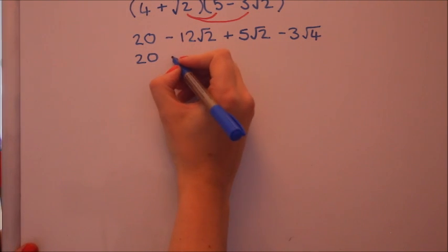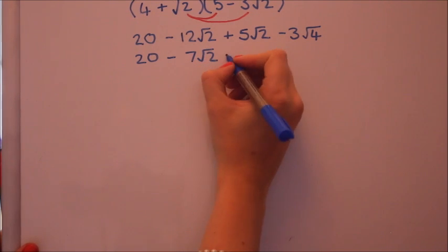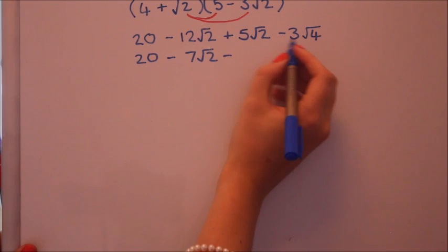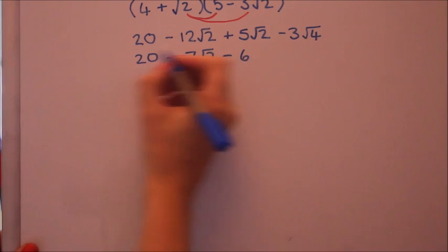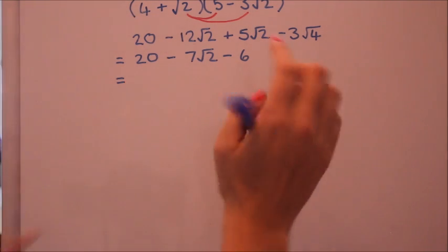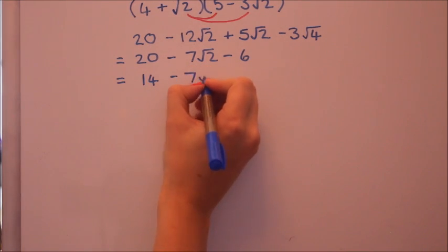We'll simplify that up now. Minus 12 root 2 plus 5 root 2, so that's minus 7 root 2. And 3 times 2 is 6. We can now collect the 20 and the minus 6, so that will be 14, and we've got minus 7 root 2.